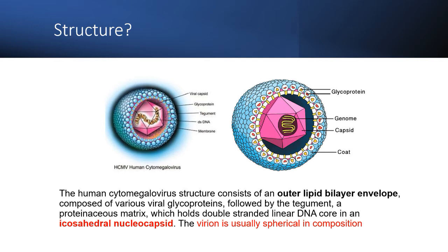Let's look at the structure of the cytomegalovirus, or CMV — human CMV, human cytomegalovirus. The structure is very similar to that of the Epstein-Barr virus, because it has a nucleocapsid inside. The nucleocapsid is icosahedral, but it has an envelope outside that contains glycoproteins, and it has a tegument layer between the nucleocapsid and the envelope.